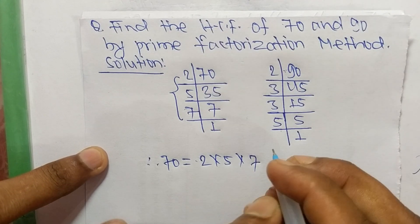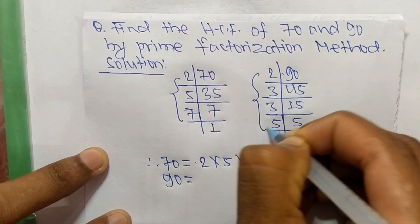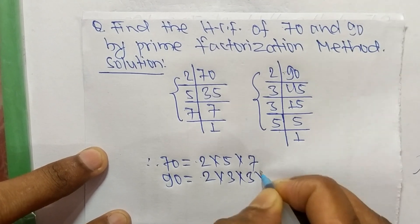And 90 is equal to, from this part, it is 2 times 3 times 3 times 5.